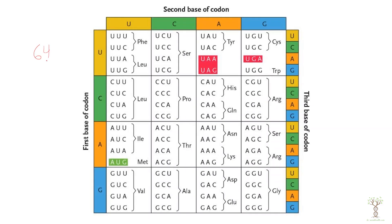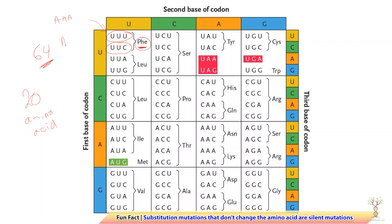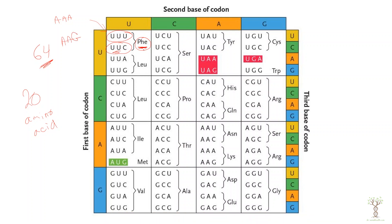There are 64 different possible codons, but we only have 20 amino acids, so some codons code for the same amino acid. For example, UUU codes for phenylalanine — the transfer RNA with anti-codon AAA carries phenylalanine. The codon UUC also codes for phenylalanine, so there's another tRNA with anti-codon AAG that matches that codon and carries the same amino acid.